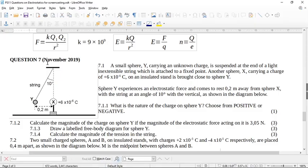Okay, let's look at question 7, an electrostatic question from the November 2019 metric past paper.